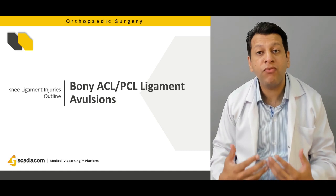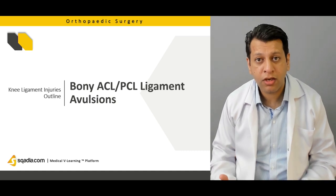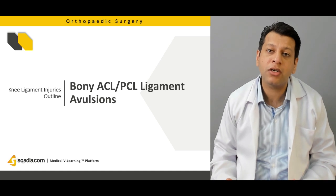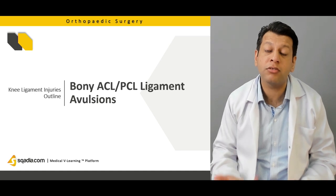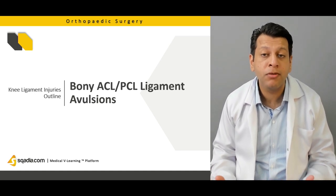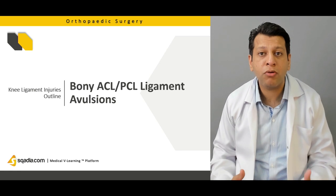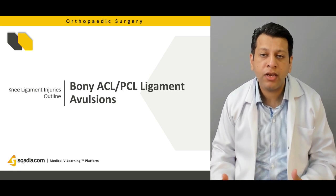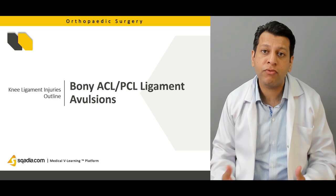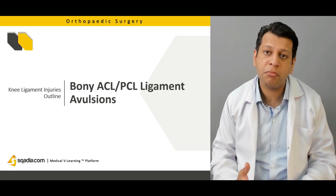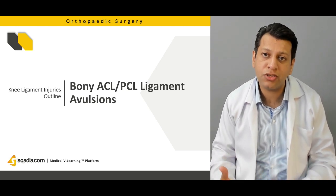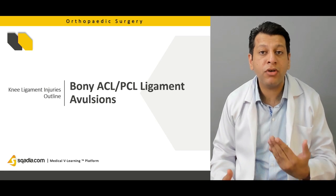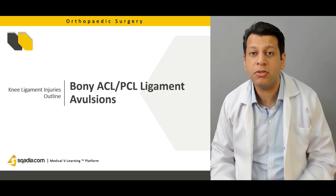We have to be very careful with treatment because if that bony fracture remains inside the joint — as both are intracapsular ligaments — not only will there be problems with laxity and a giving-way feeling, and the patient may have rehabilitation problems, but there will always be arthritis as well. So a bony ACL or PCL avulsion means you have to deal with the bone as well as the ligament.